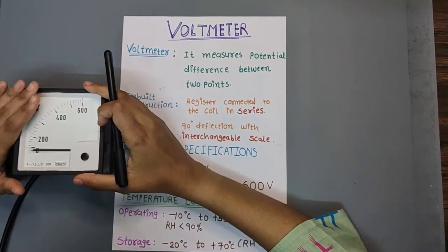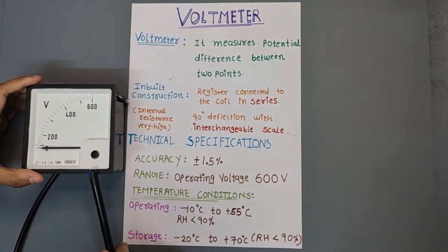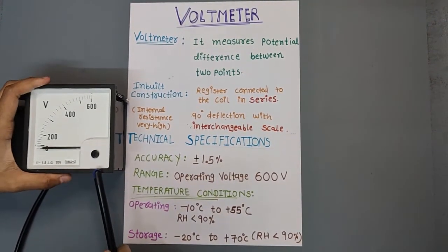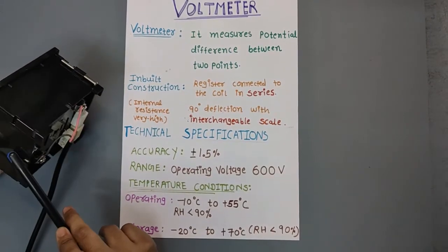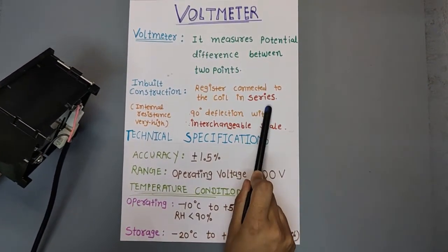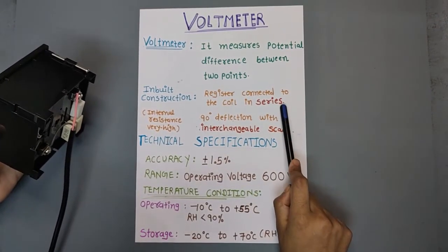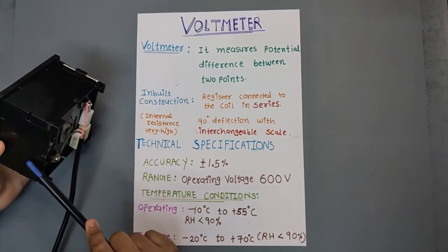We talk about the internal construction. There is a resistor that connects with the coil in series. The internal resistance is very high.